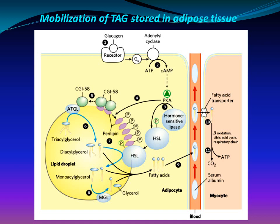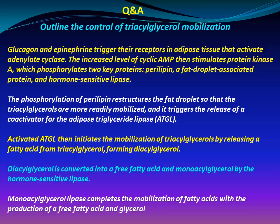Fatty acids leave the adipose tissue and are transported in the blood bound to serum albumin. They are released from the albumin and transported to the myocyte by a specific fatty acid transporter. In the myocyte, fatty acids are oxidized to carbon dioxide and ATP.